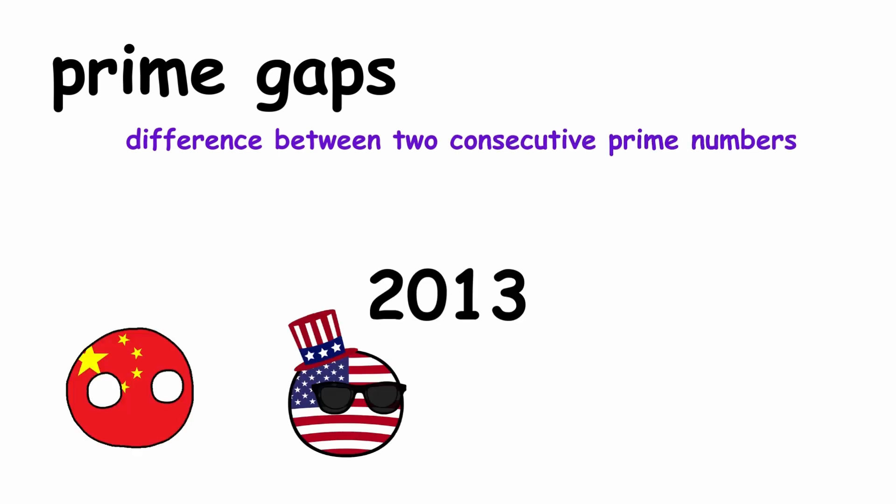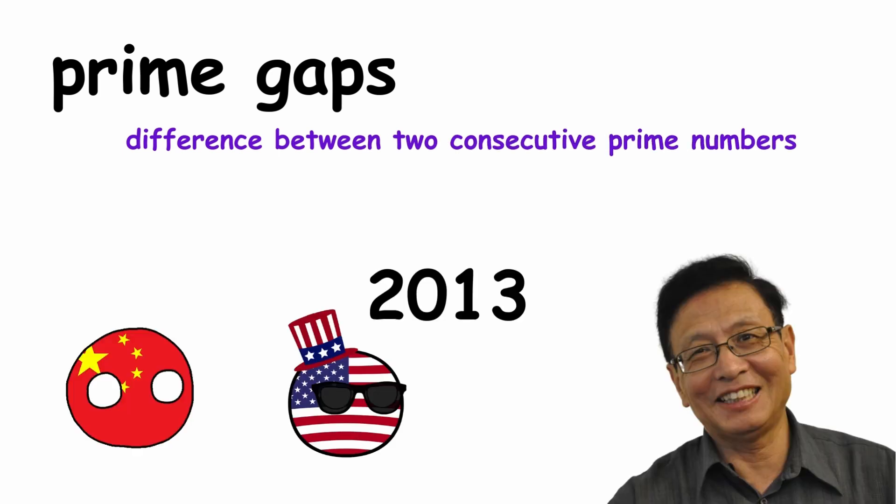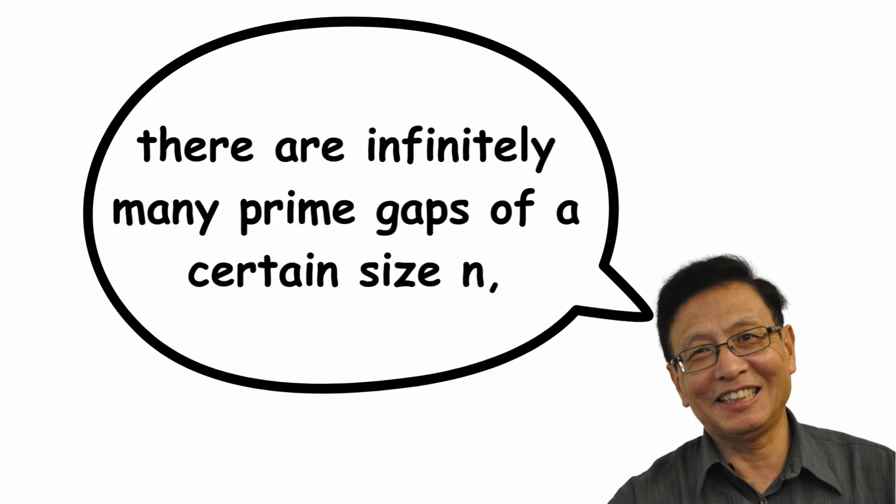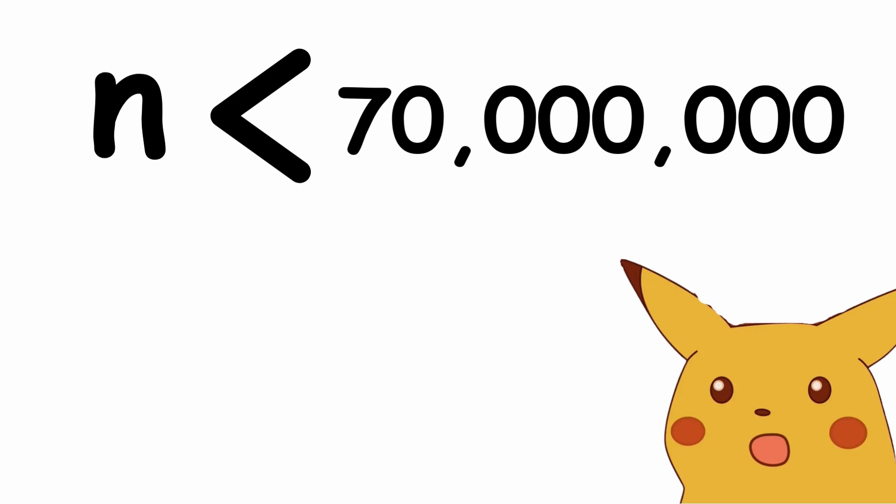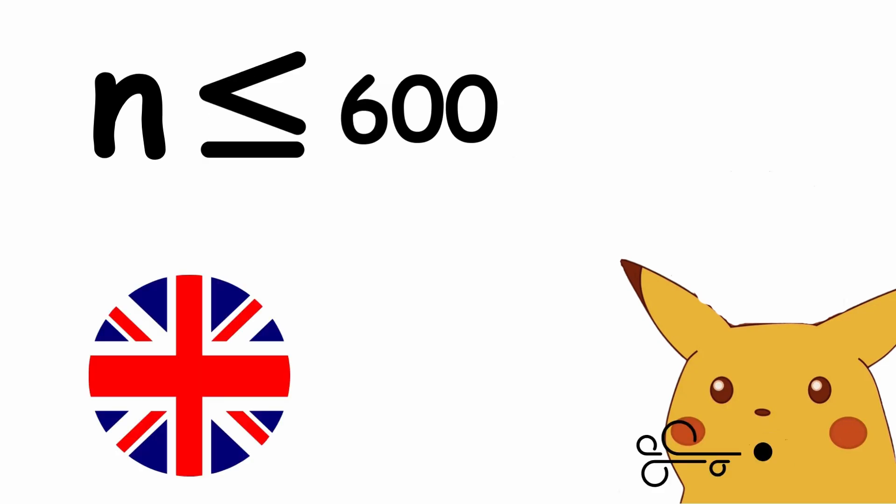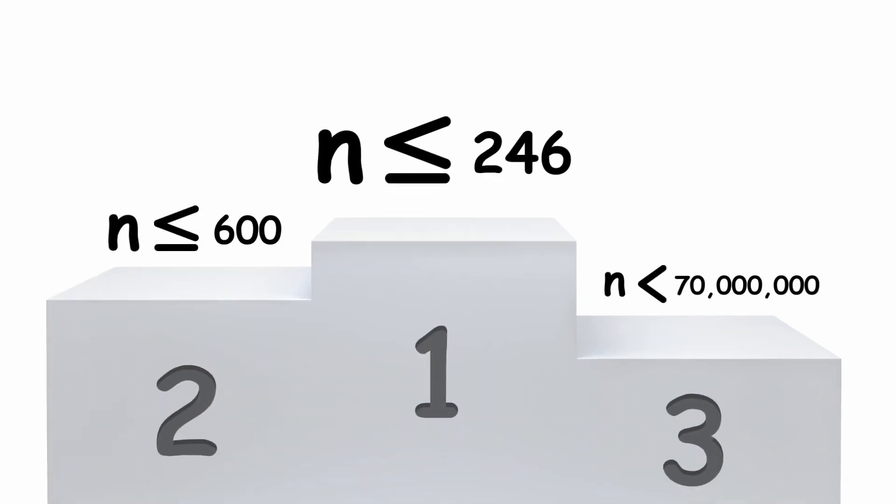In 2013, Chinese-American mathematician Yitang Zhang proved that there are infinitely many prime gaps of a certain size n, where n must be less than 70 million. This was improved to being less than or equal to 600 by English mathematician James Maynard later that same year, and the following year, this number was further improved to 246, where the record stands today.